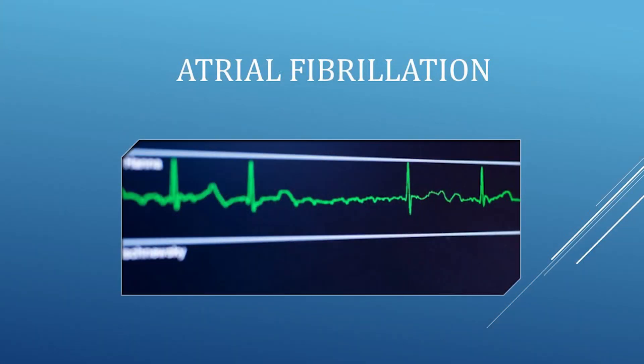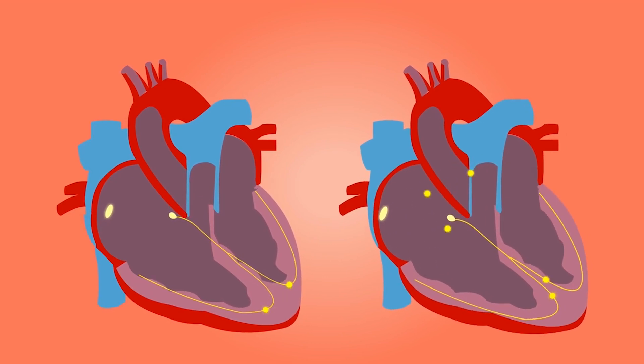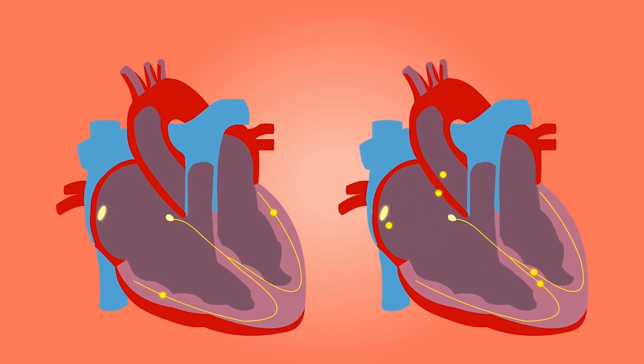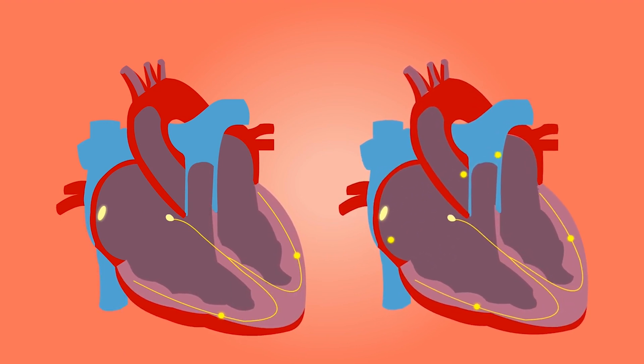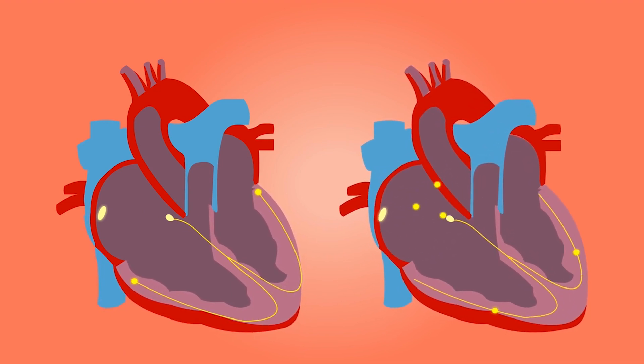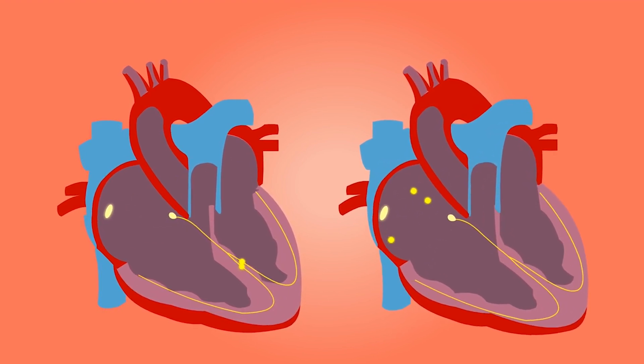What is atrial fibrillation? Atrial fibrillation, also known as AFib or AF for short, is the most common abnormality in heart rhythm in which the heartbeat is completely irregular. This is how it looks on the heart monitor. As you can see on the left side of the screen, normally the heartbeat originates in the right upper chamber of the heart and the electrical activity travels down to the lower chambers, leading to contraction with resultant pumping of blood to the lungs and the body.